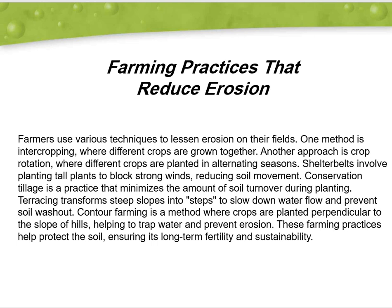Another approach is crop rotation, where different crops are planted in alternating seasons. Shelter belts involve planting tall plants to block strong winds, reducing soil movement. Conservation tillage is a practice that minimizes the amount of soil turnover during planting.